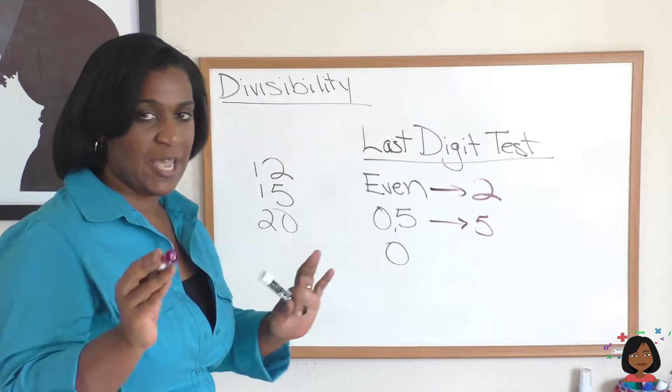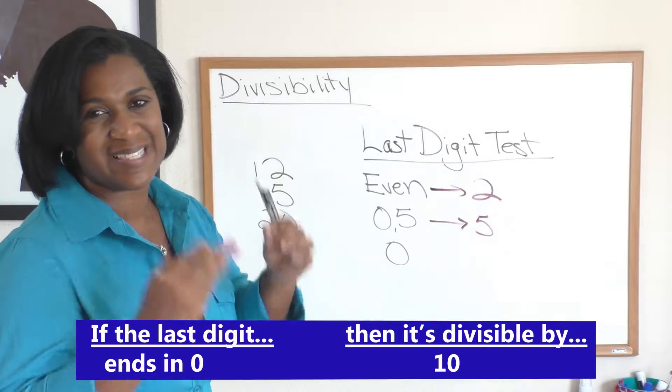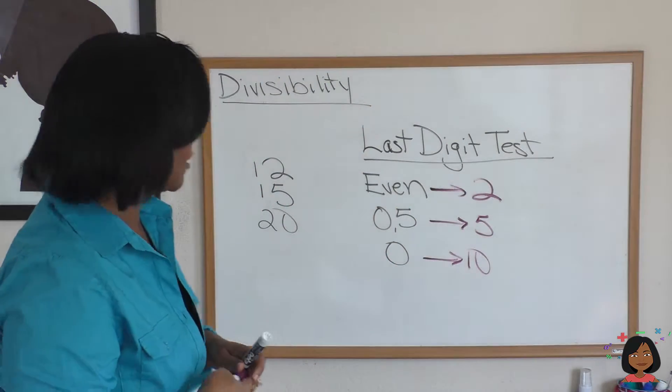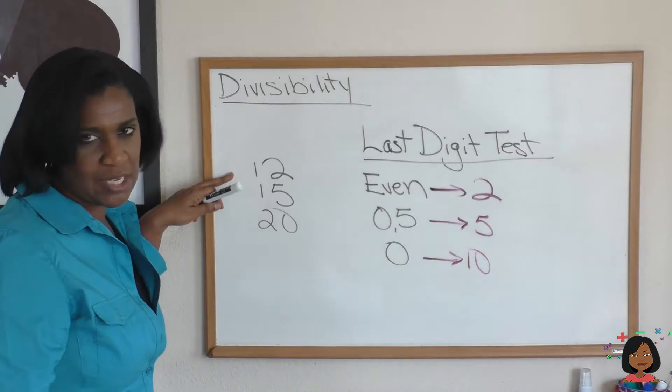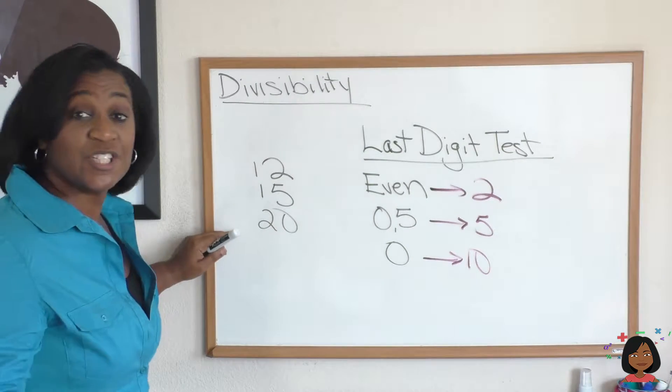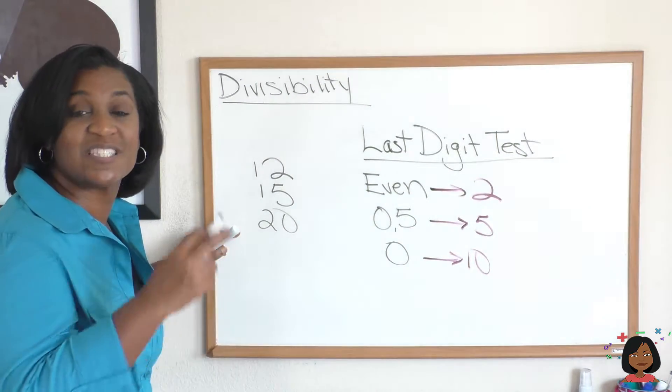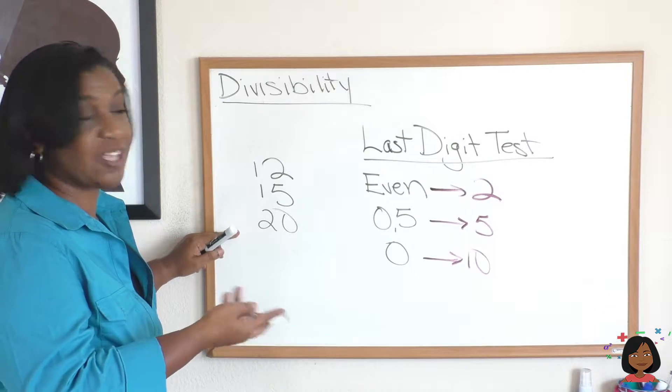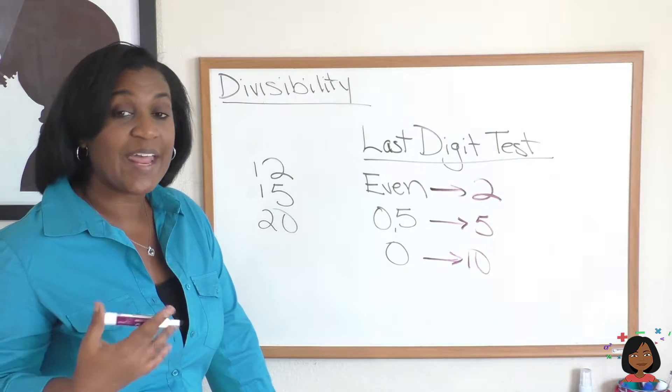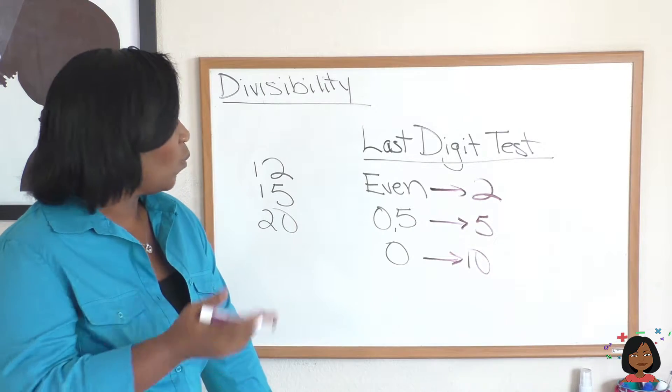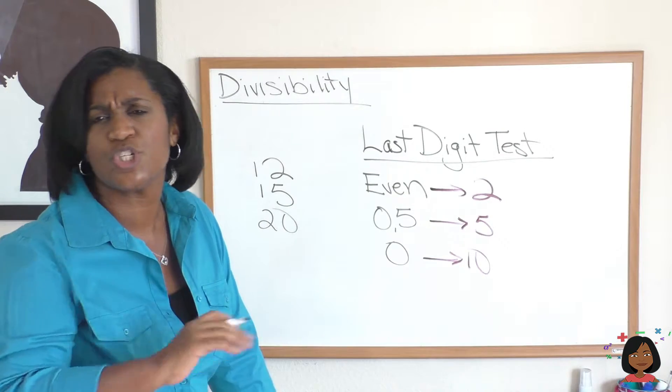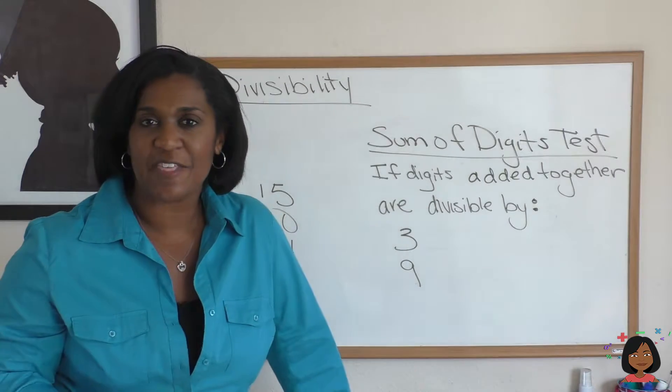Let's give you one more tip and trick. If your number ends in the number 0, that means that it is divisible by 10. Let's take a look. Does 12 end in 0? Nope. Not divisible by 10. 15 end in 0? Nope. Not divisible by 10. Does 20 end in 0? Yes, it does. Which means it's divisible by 10. How many times? 10 goes into 20 two times. So those are just some last digit tests that help you understand quickly what numbers are divisible or what your numbers are divisible by. And that just makes factoring so much easier.